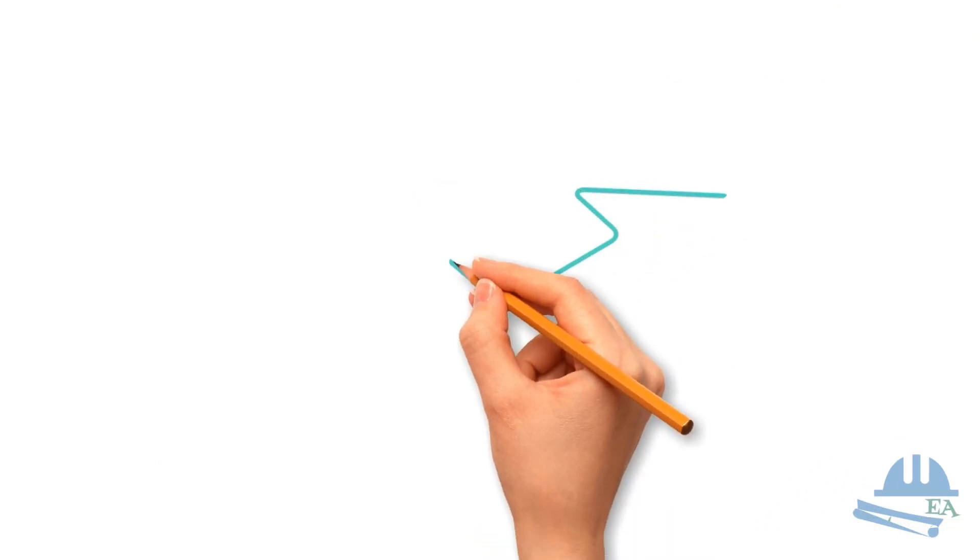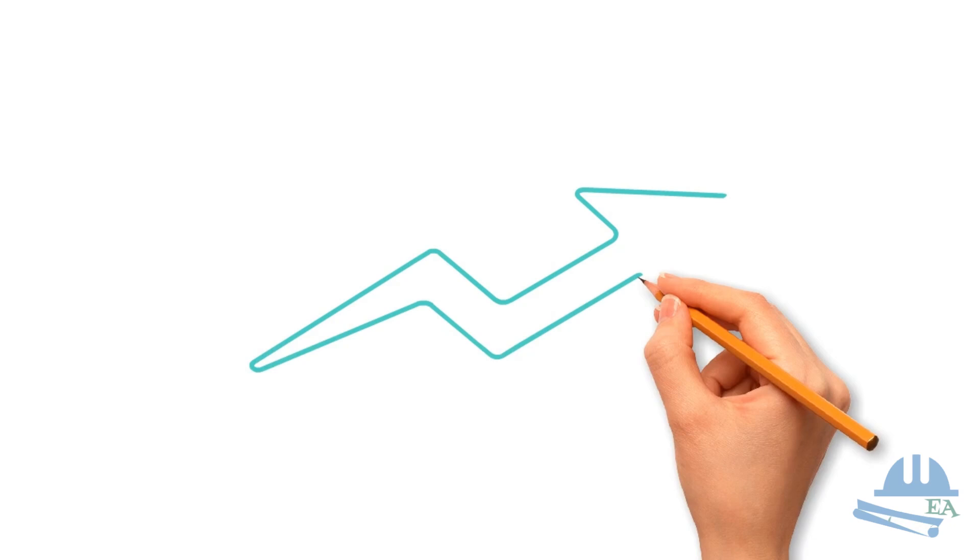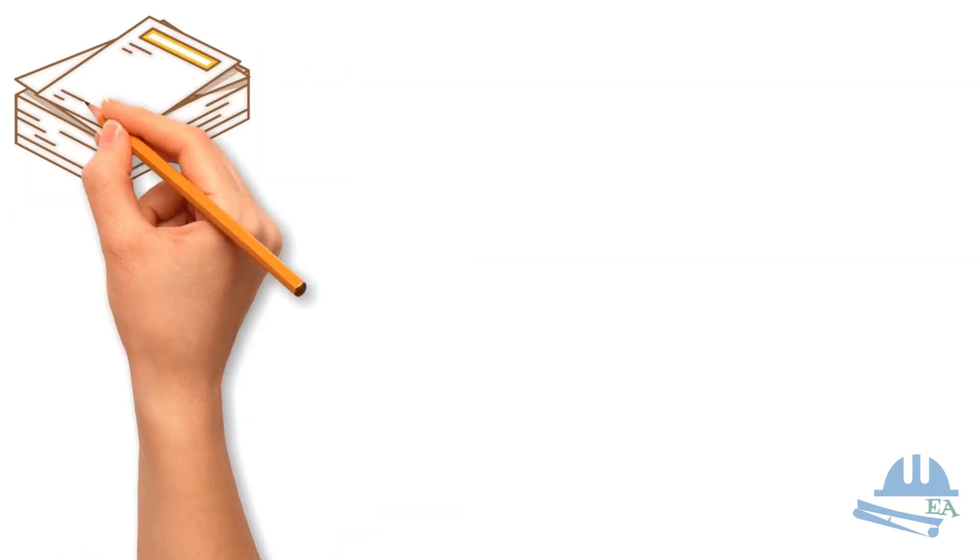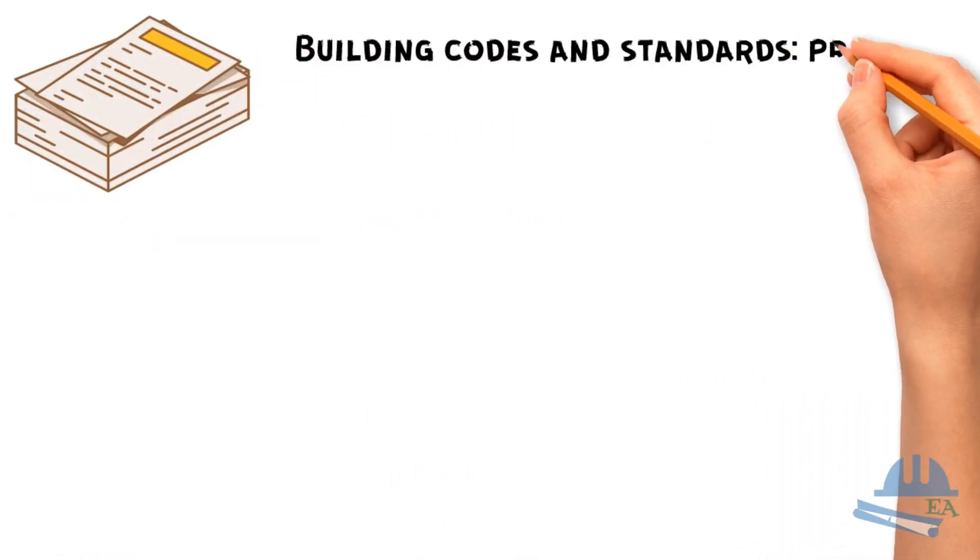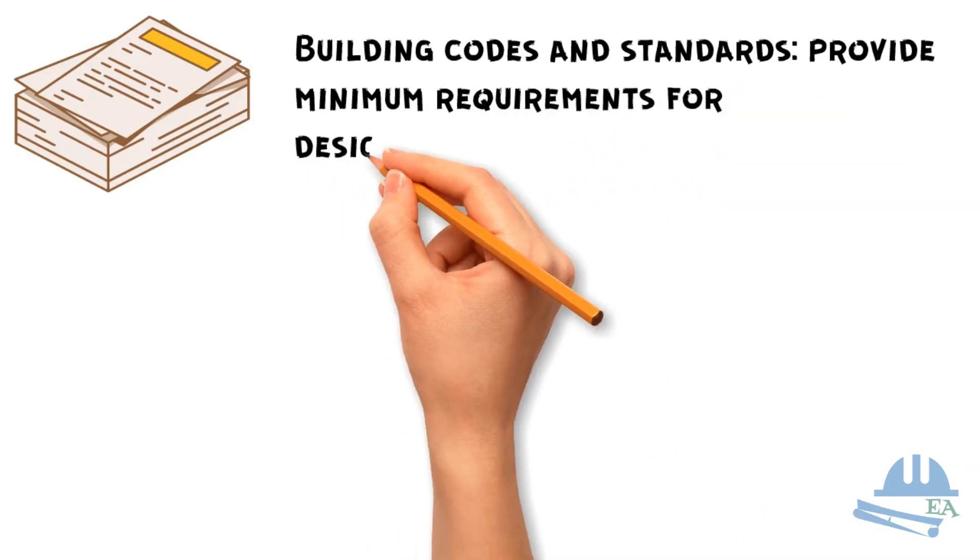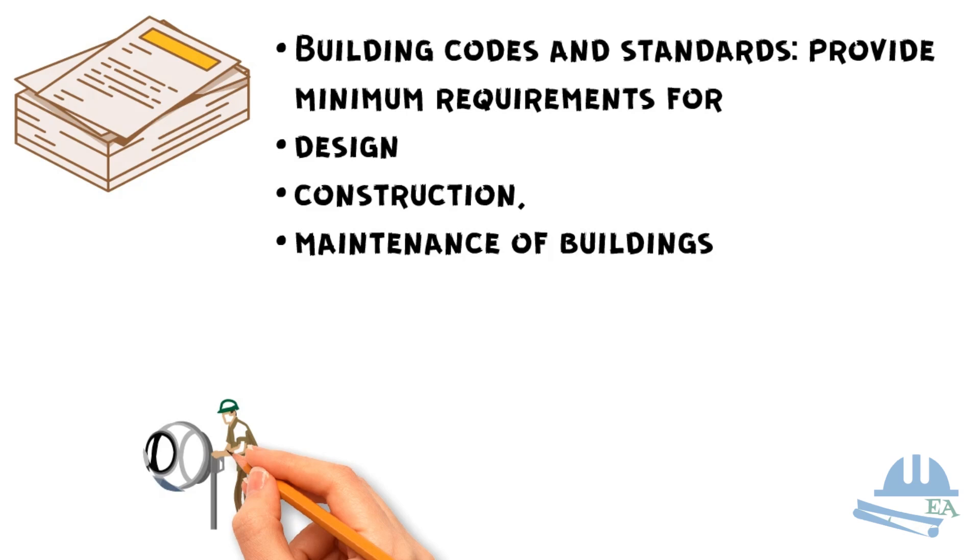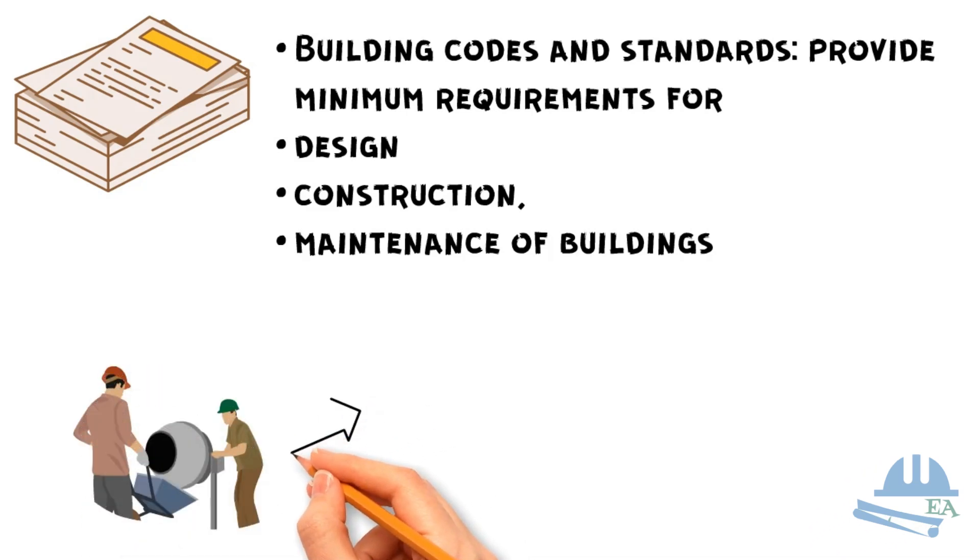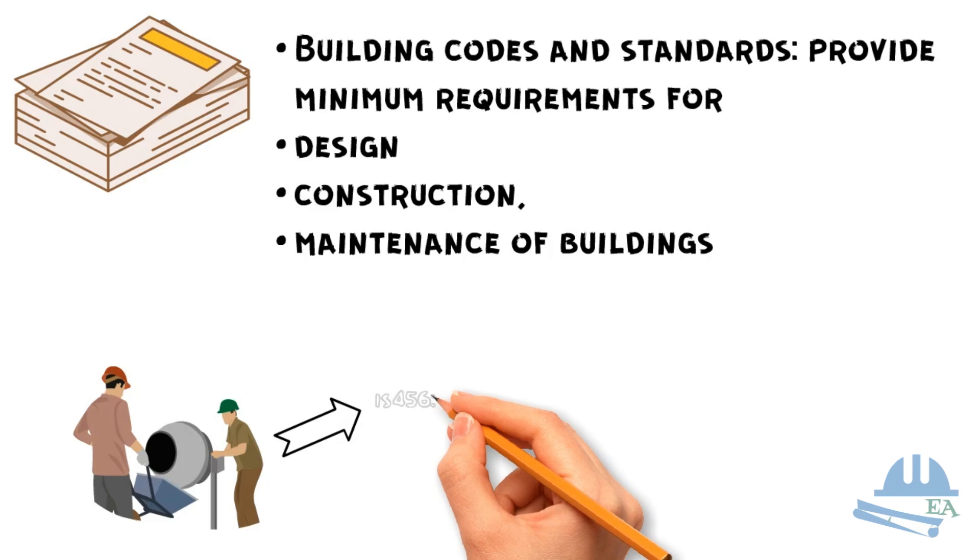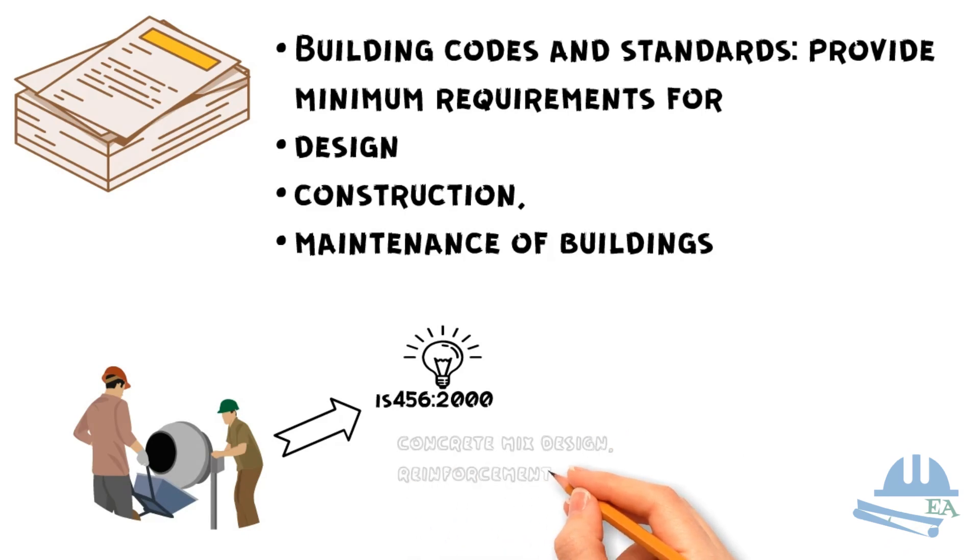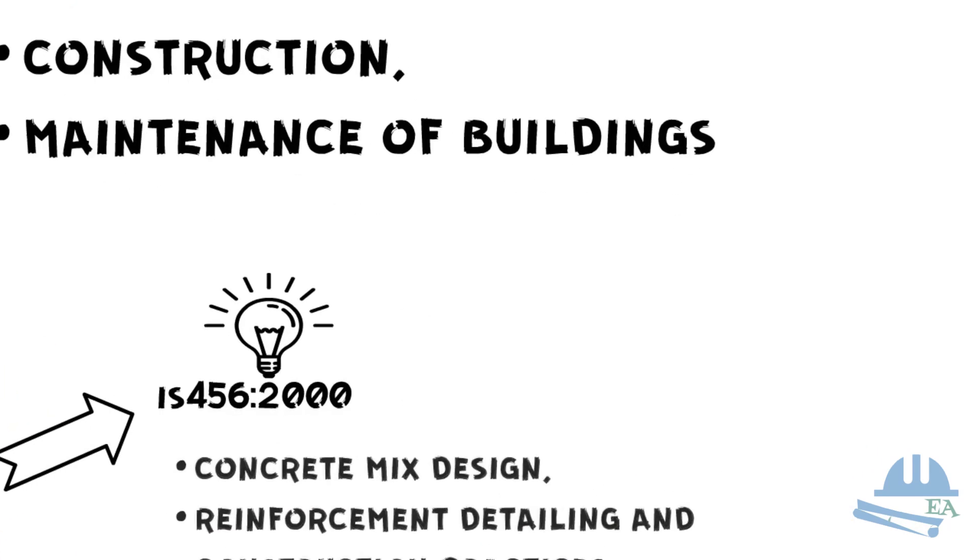Let's move on to the fourth common mistake in structural design, ignoring building codes and standards. Building codes and standards are the documents that provide minimum requirements for the design, construction, and maintenance of buildings and structures. For example, IS 456-2000 is the code for plain and reinforced concrete. This code provides the necessary specifications for concrete mix design, reinforcement detailing, and construction practices.